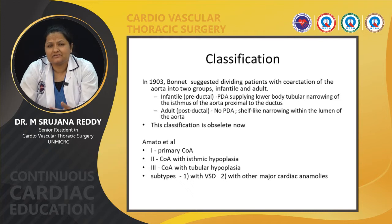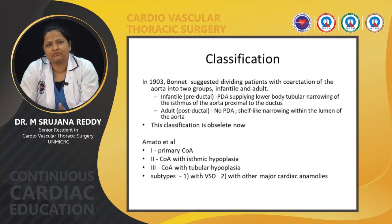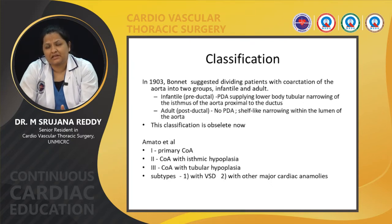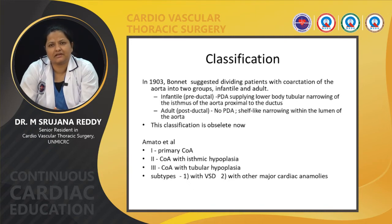This classification is now obsolete. Imato et al. proposed a classification into three groups with two subtypes: primary coarctation, coarctation with isthmic hypoplasia, and coarctation with tubular hypoplasia. The subtypes are with VSD and with other major cardiac anomalies.